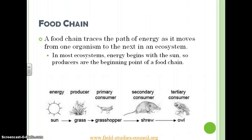Food Chain: a food chain traces the path of energy as it moves from one organism to the next in an ecosystem. In most ecosystems, energy begins with the Sun, so producers are the beginning point of a food chain.